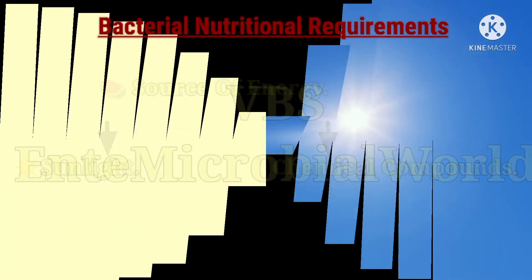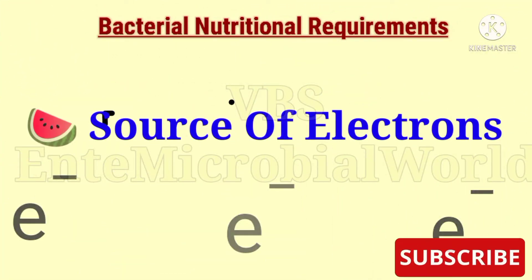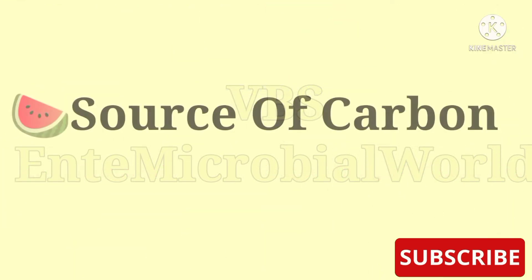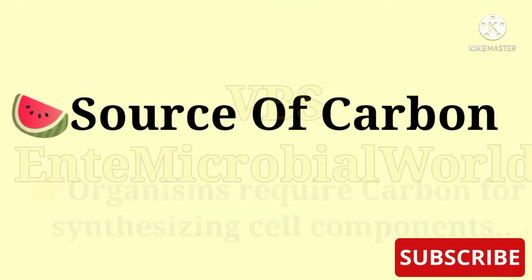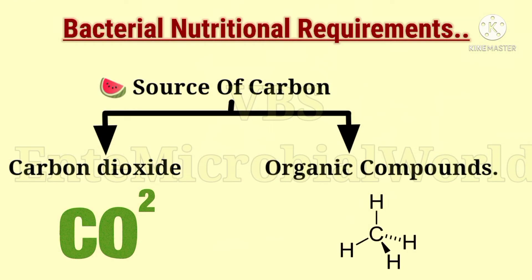Source of energy: sunlight and chemical compounds are the two major sources of energy. Source of electrons: for their metabolism, organic compounds and reduced inorganic compounds are the major sources of electrons.